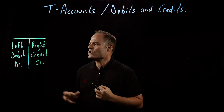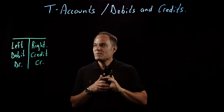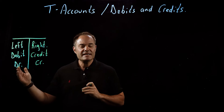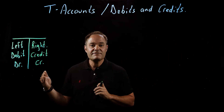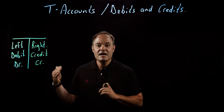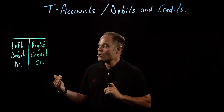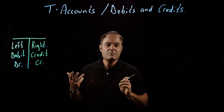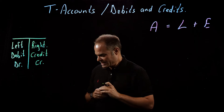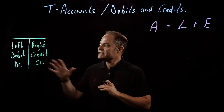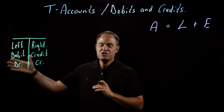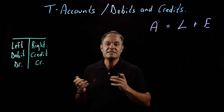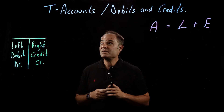What does that all mean? Well, what it means is we have one side for keeping track of increases in an account, and the other side for keeping track of decreases in an account. Why don't we just call it the plus side and the minus side? Well, that's the trick in accounting. You see, which side is the increase and which side is the decrease depends on the account.